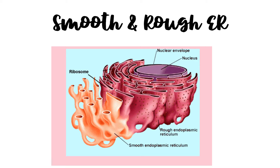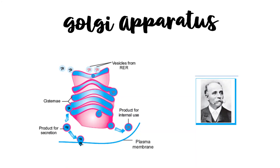Rough endoplasmic reticulum is so named because of its rough appearance due to numerous ribosomes that are attached to it. Due to the presence of these ribosomes, rough endoplasmic reticulum serves a function in protein synthesis. Smooth endoplasmic reticulum lacks ribosomes and is involved in lipid metabolism and in the transport of materials from one part of the cell to the other. It also detoxifies harmful chemicals that have entered the cell.